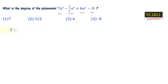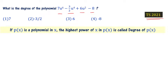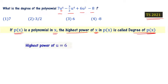Definition: If p(x) is a polynomial in x, the highest power of x in p(x) is called the degree of p(x). So for this polynomial in variable u, we need to find the highest power of u — that gives us the degree of polynomial p.